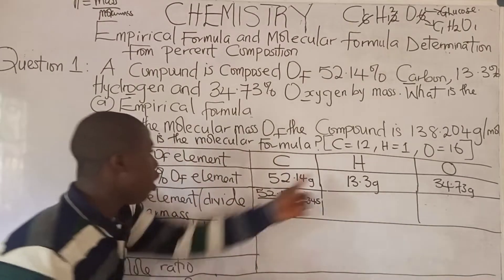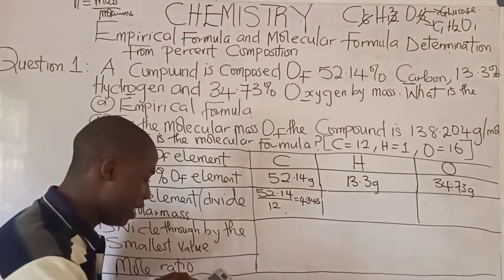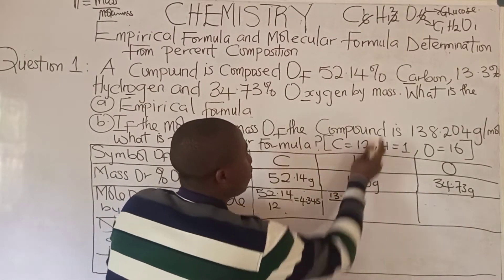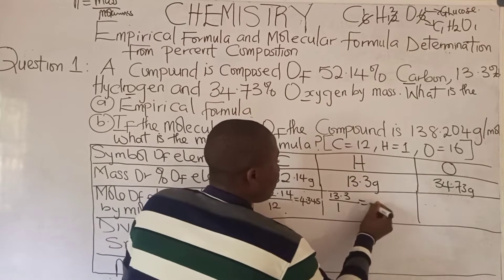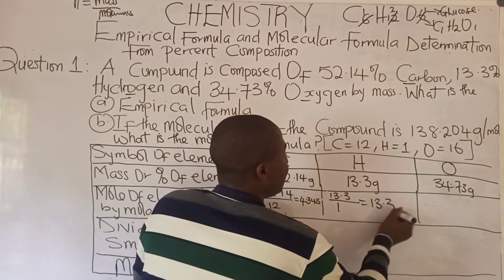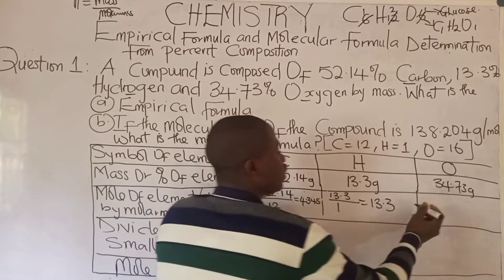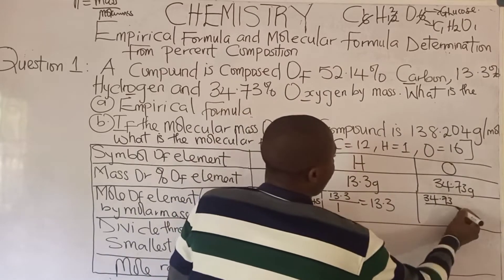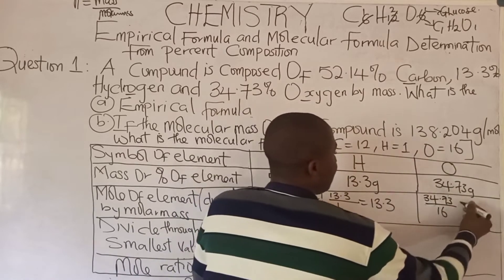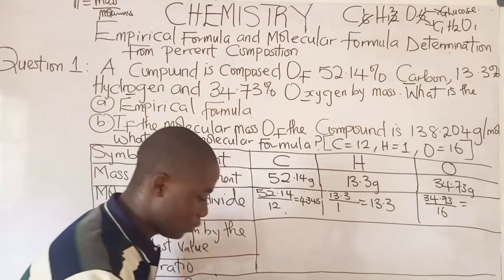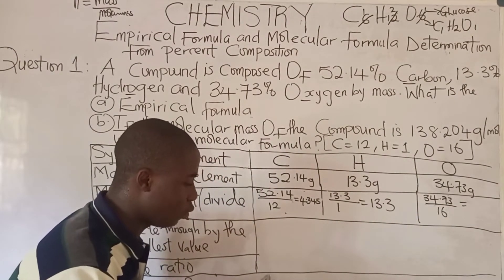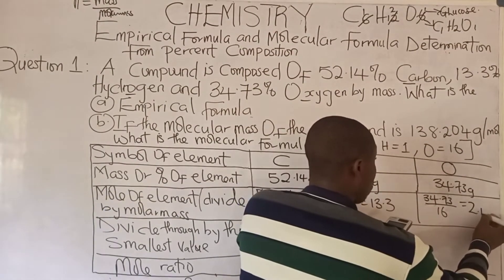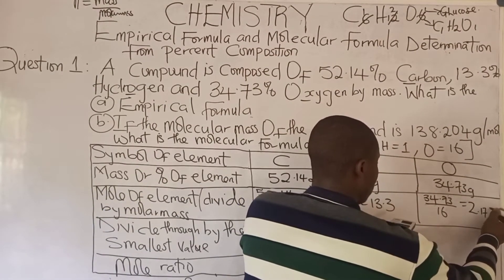Let's calculate the number of moles of hydrogen: mass over molar mass is 13.3 over 1, which gives 13.3 moles. And lastly, for oxygen: mass over molar mass is 34.73 grams over 16, and that gives us 2.171 moles.